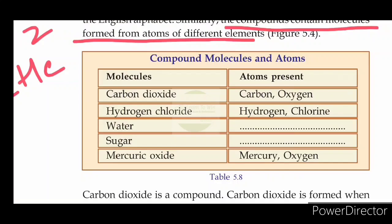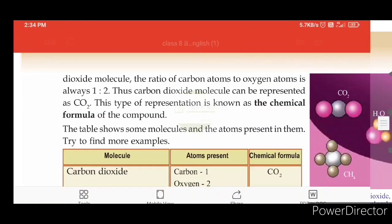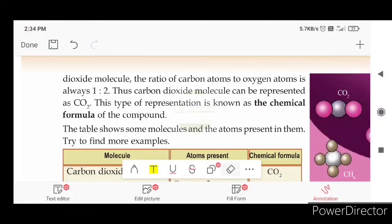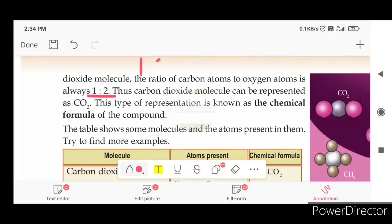In hydrogen chloride, it is the combination of hydrogen and chlorine. In the carbon dioxide molecule, the ratio of carbon atoms to oxygen atoms is always 1 is to 2. One atom is carbon and two atoms are oxygen, so the ratio is 1 is to 2. Thus, carbon dioxide molecule can be represented as CO2.